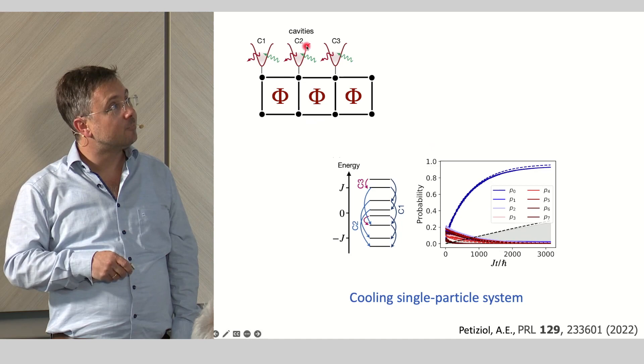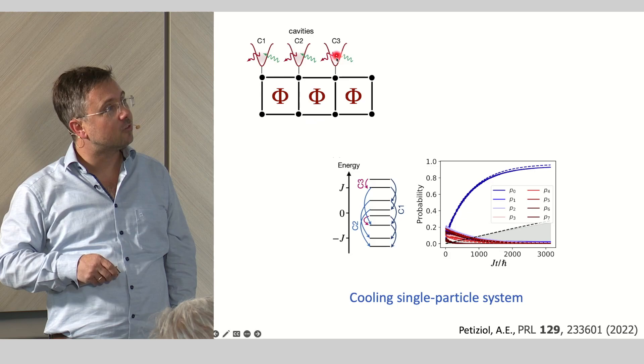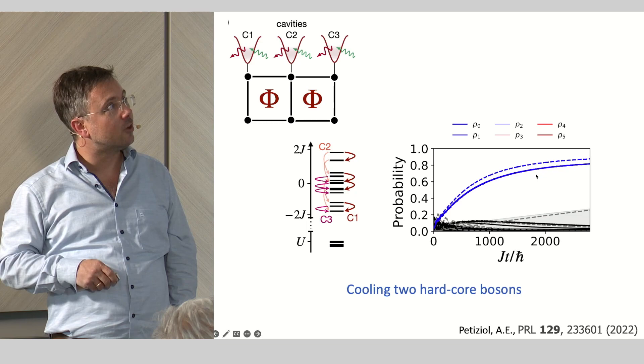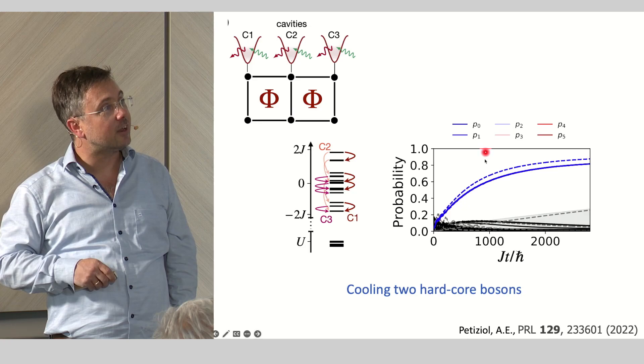This is a system of eight qubits or eight lattice sites, and you can use three resonators to cool it to its ground state. You can also do it here for a smaller system, but with two hardcore bosons, essentially. And it also works.